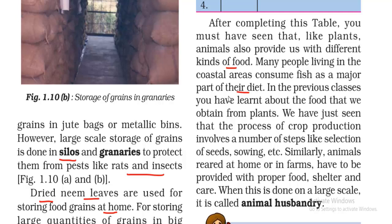In previous classes, you have learnt about the food we obtain from plants. The process of crop production involves a number of steps like selection of seeds, sowing, preparing the soil, irrigation, and so on. We have studied these multiple steps.